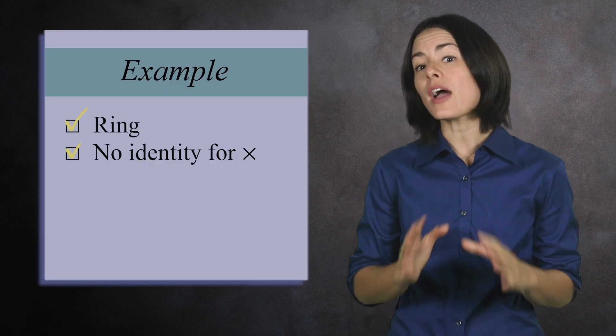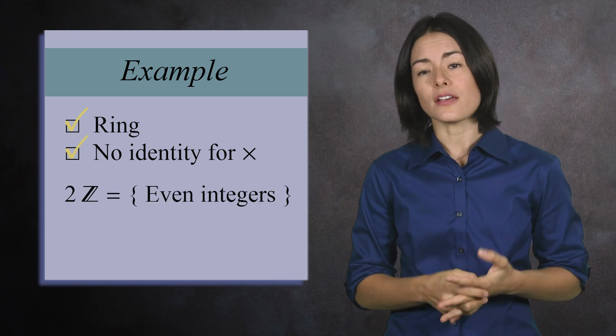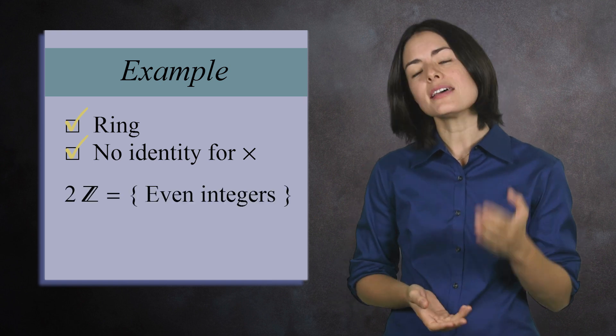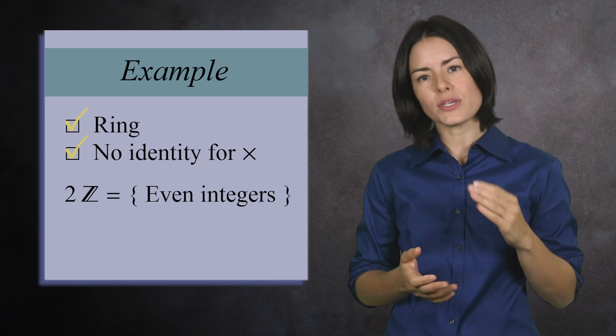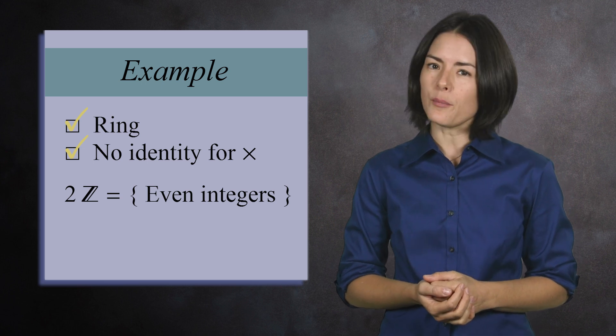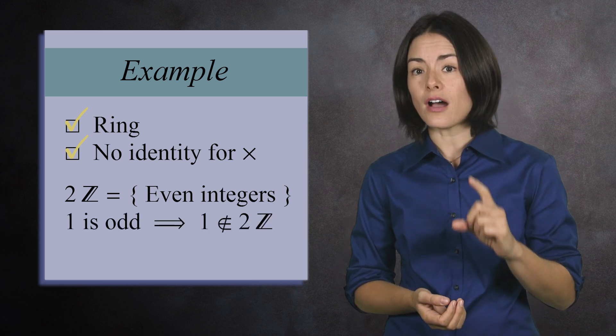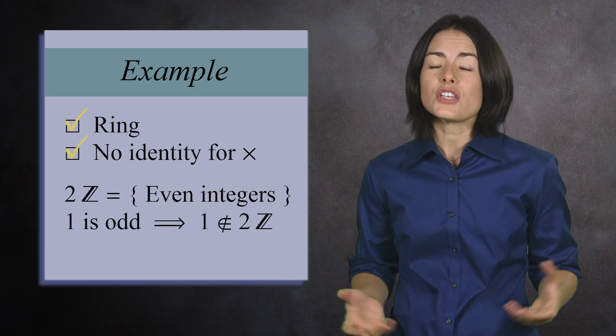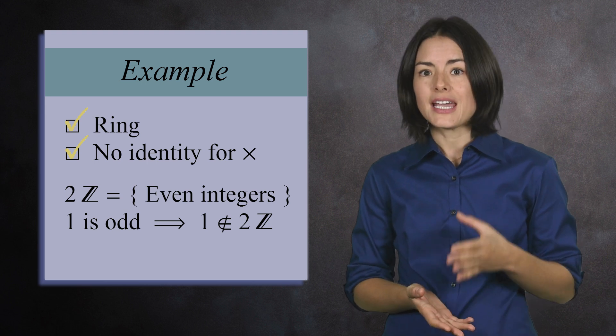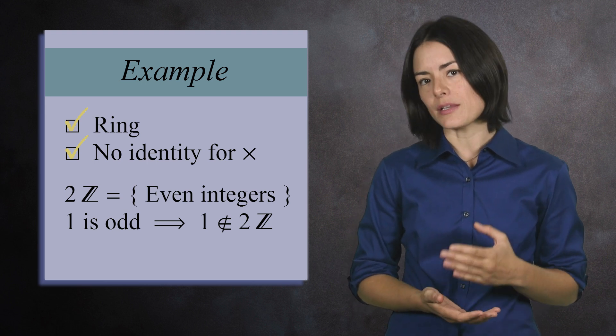So far, every ring that we've seen has been commutative and has had an identity element for multiplication. Let's now look at rings where this is not the case. An example of a ring without an identity element is a set of even integers. If you add, subtract, or multiply any two even numbers, you'll get another even number. But the number 1 is not in this set because 1 is odd. So while this is a commutative ring, it does not have an identity element for multiplication.